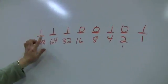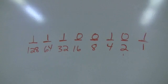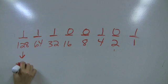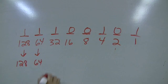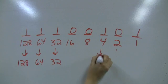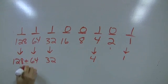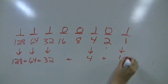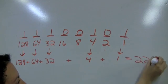I've got 1, 1, 1, 0, 0, 1, 0, 1. So again, wherever I have a 1, I bring down the number. I've got a 1 under 128, a 1 under 64, a 1 under 32, a 1 under 4, and a 1 under 1. I take each one of these numbers and add them up, and that gives me 229.